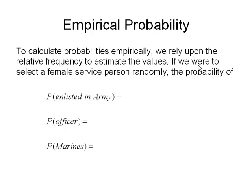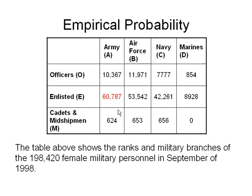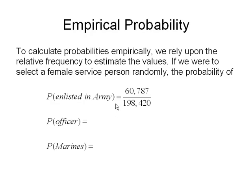So to calculate probabilities empirically, we're going to rely upon the relative frequency to estimate the values. So if we were to select a female service person randomly of that group, the probability of enlisted in the Army, well, what I would have to do is I'd have to go find out how many of those women were enlisted people in the Army, and then go ahead and divide that by the total. So, enlisted women who were in the Army were 60,787. So I would go ahead and figure out the relative frequency. So I'd take 60,787 and divide it by 198,420. That fraction would be the probability that if I selected a female service person randomly in September of 1998, they would be an enlisted person in the Army.